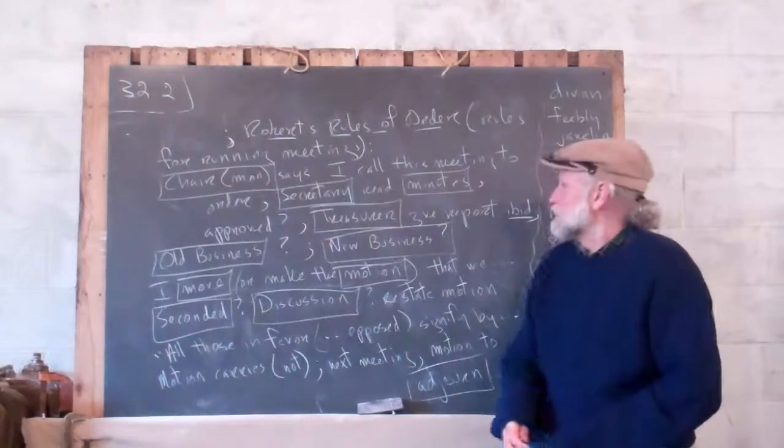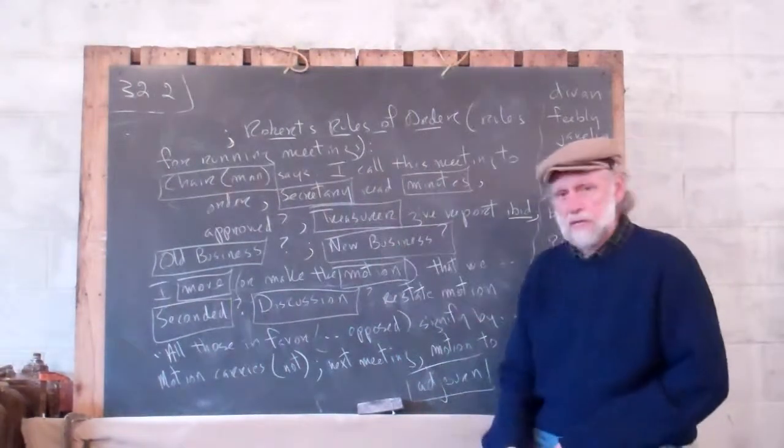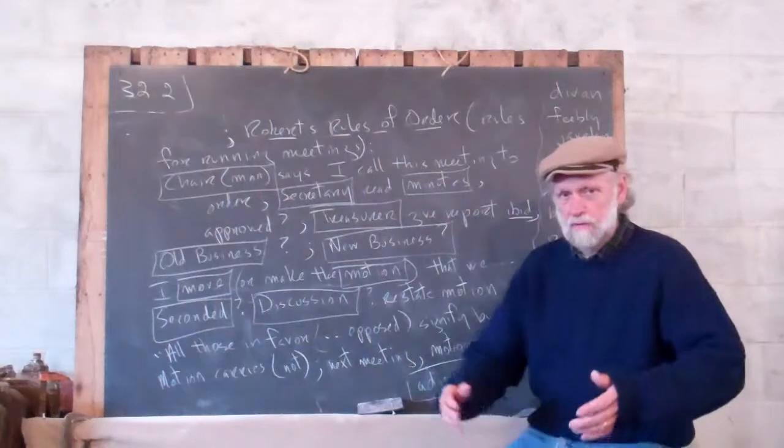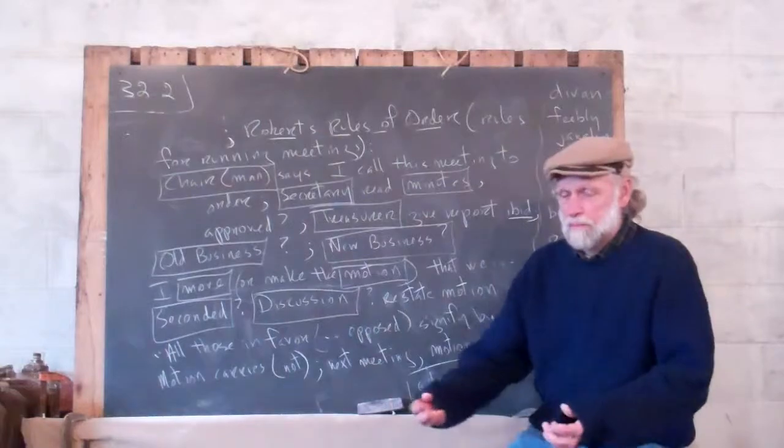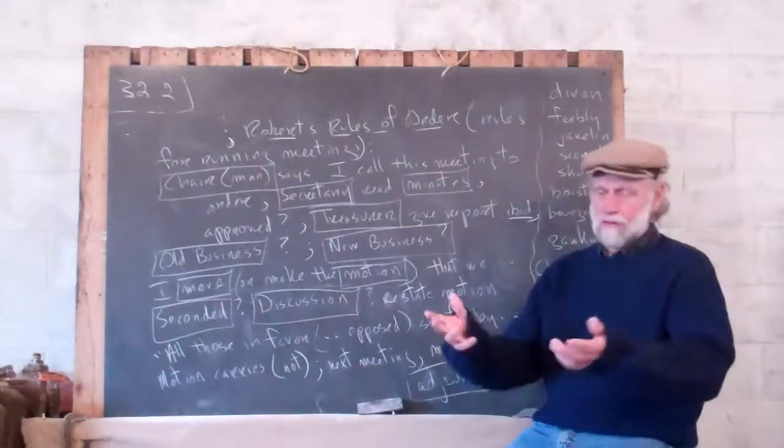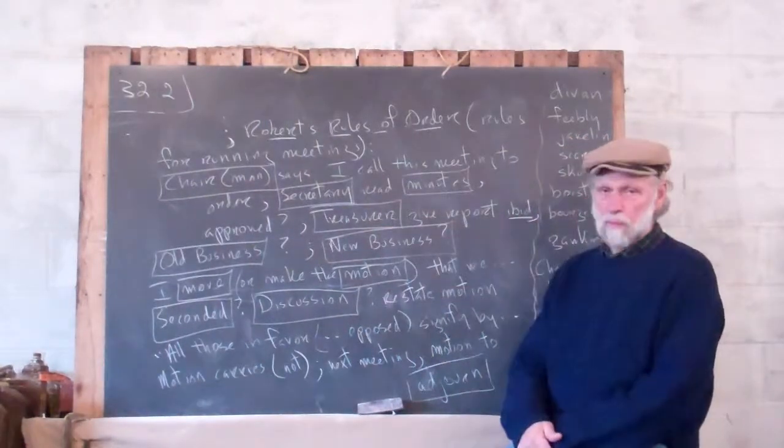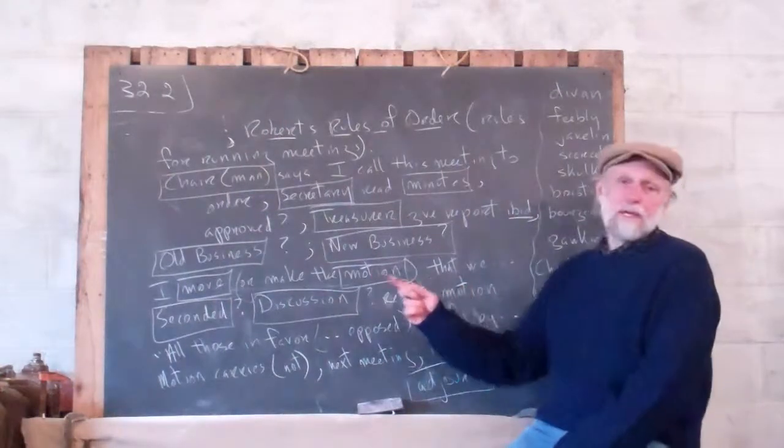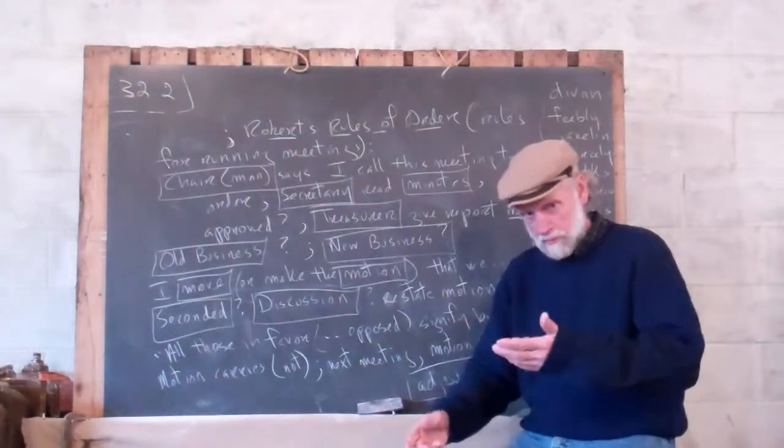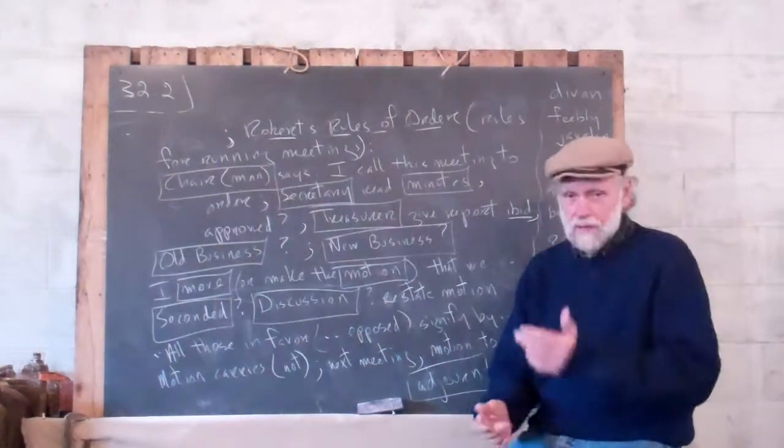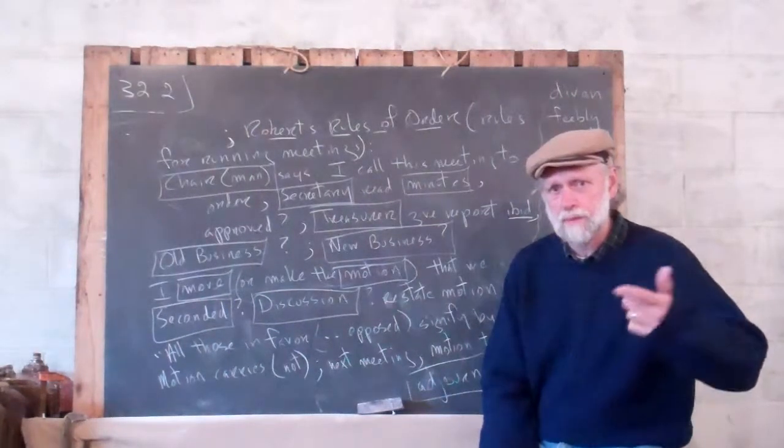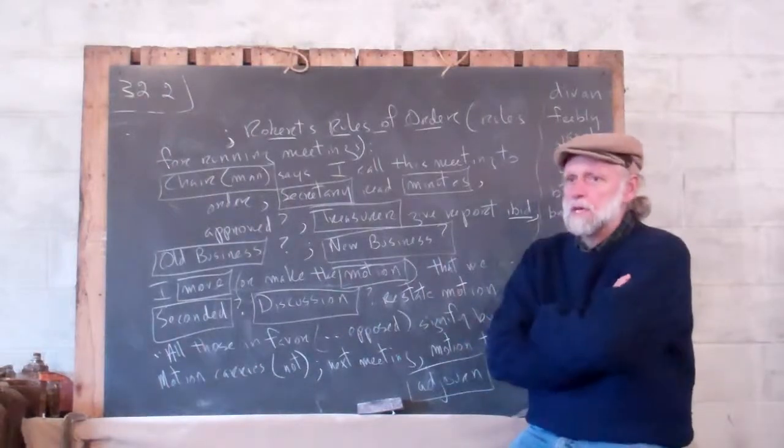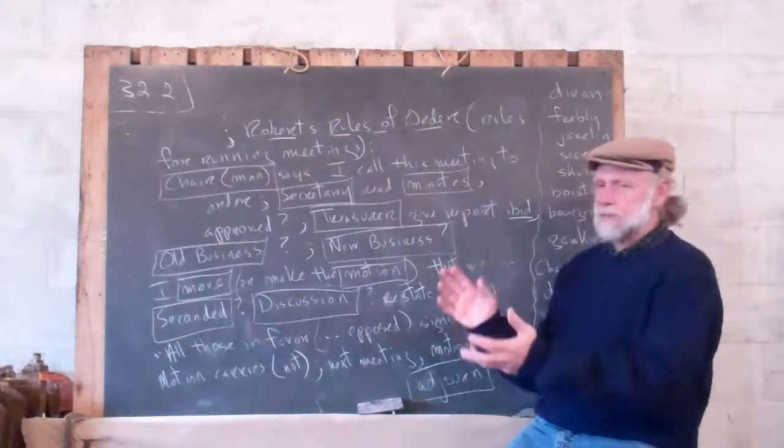Then the chairman will ask for the treasurer to give his report. The treasurer is the person who keeps track of the money. The group, maybe they have some money. The treasurer will give a report. And I wrote down ibid, by that I mean approved. And somebody might say, wait a minute, I thought we had $100 more than that. What happened to that? And they'll discuss it. But eventually it'll be approved.